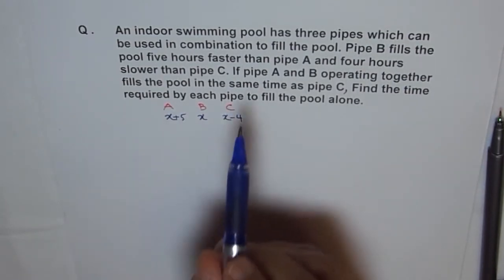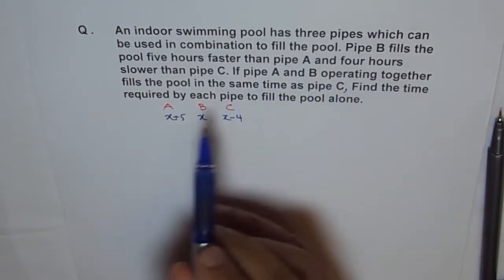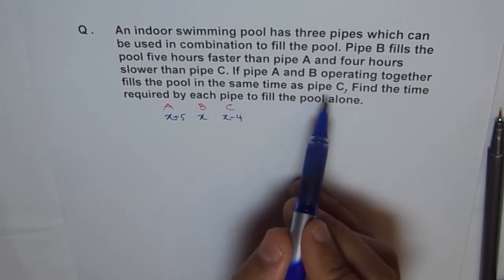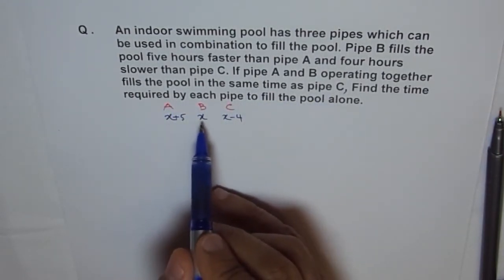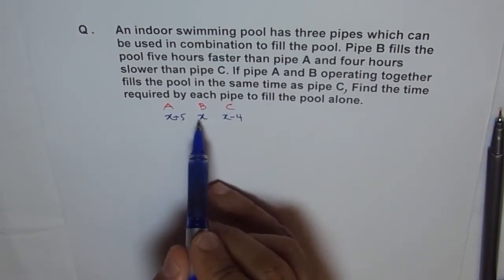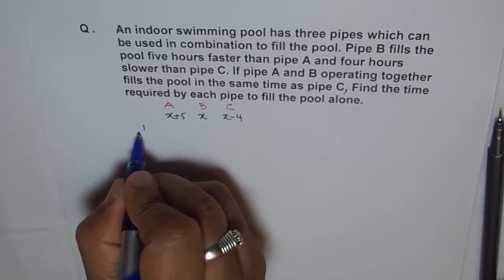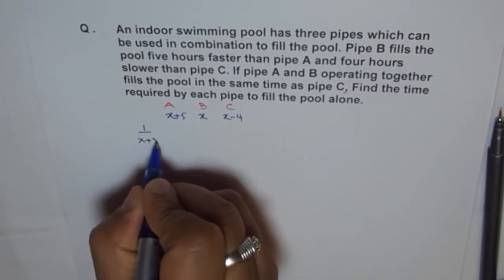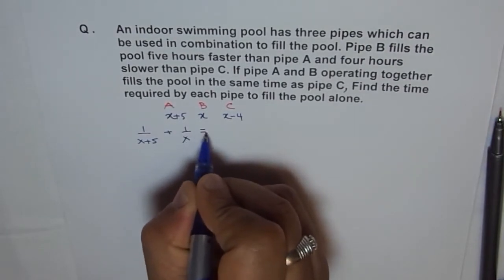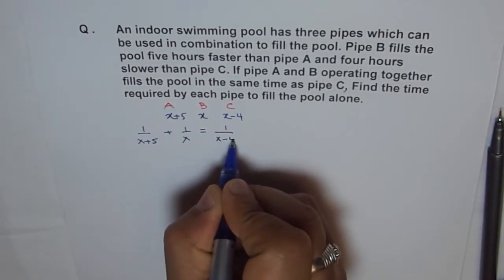The condition given is that pipe A and B operating together fill the pool in the same time as pipe C alone. So the combined rate of A and B equals the rate of C: one over X plus five, plus one over X, equals one over X minus four.